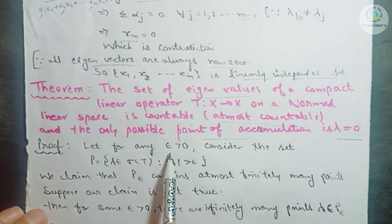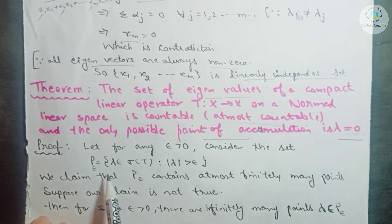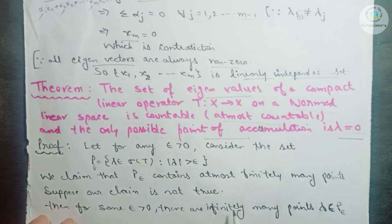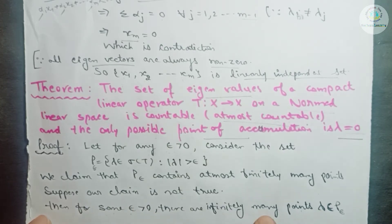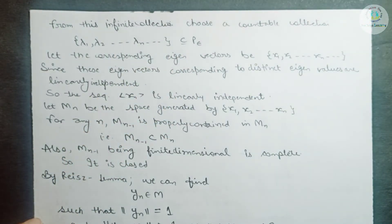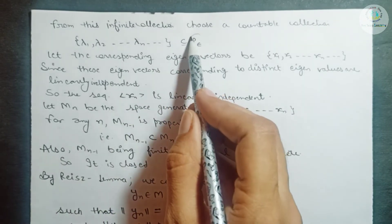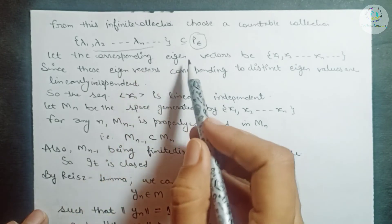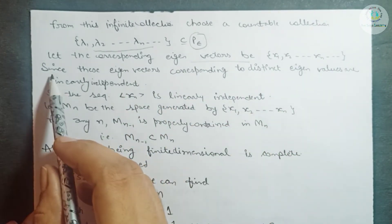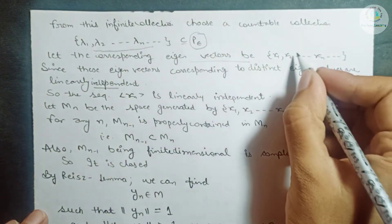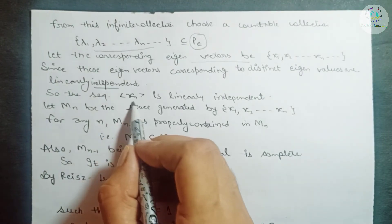For the proof: let, for any ε > 0, consider the set P(ε) = {λ ∈ σ(T) : |λ| > ε}. We claim this set contains at most finitely many points. Suppose our claim is not true, i.e., this set contains infinitely many points. Then for some ε > 0 there are infinitely many points λ in P(ε). From this infinite collection, we take a countable collection λ1, λ2, ..., λn, ... ⊆ P(ε), with corresponding eigenvectors x1, x2, ..., xn, .... Since these eigenvectors correspond to distinct eigenvalues, they are linearly independent — as proved in the lemma — so the sequence {xₙ} is a linearly independent sequence.